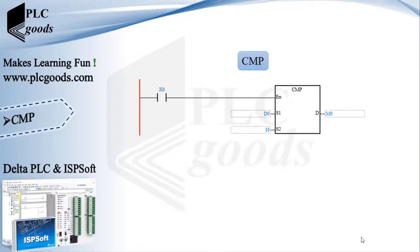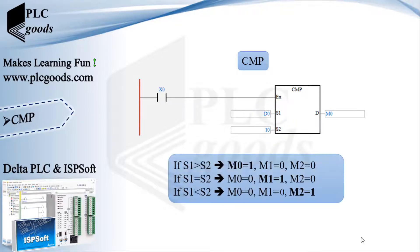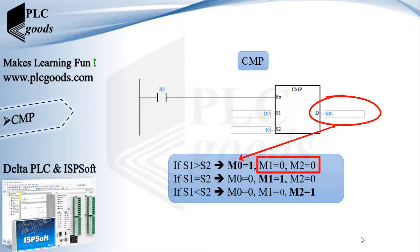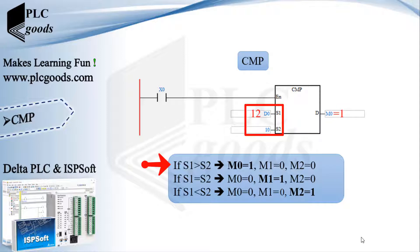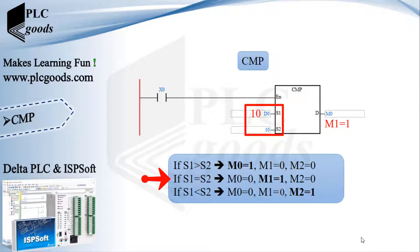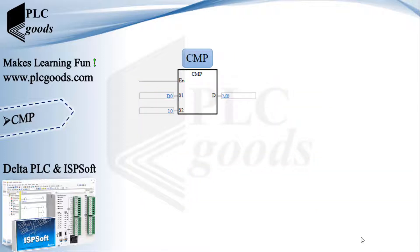Let's start with the CMP instruction. It gets two values and compares them algebraically, and based on these conditions turns on a bit address. Note that when a bit address like M0 is considered as its output, this instruction will use two next addresses too. If the first input is greater than the second input, M0 will be 1. If the two inputs are equal, M1 will be 1.